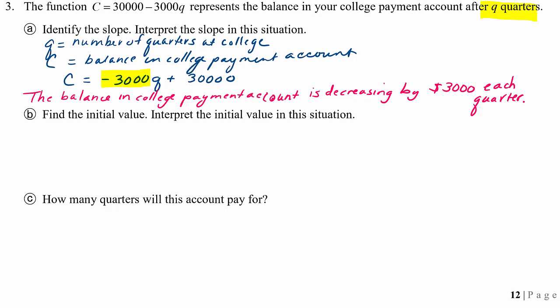Part B says find the initial value. Interpret the initial value in this situation. So our initial value, as you know, is our y-intercept, our vertical intercept, which in this case will be represented by the 30,000. So the 30,000 is our vertical intercept, and that's our initial value in this situation. That's where Q is 0.